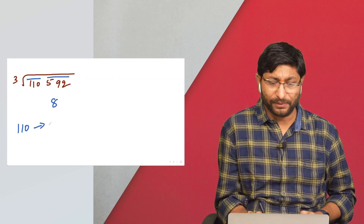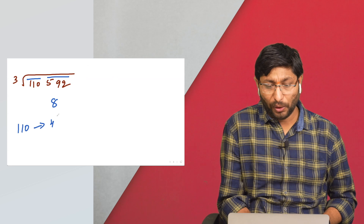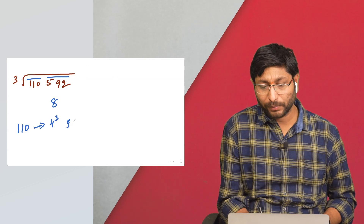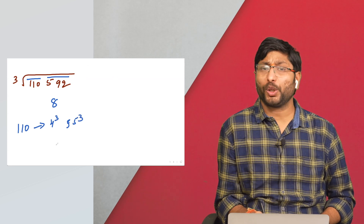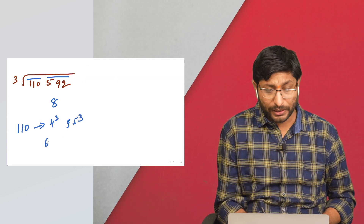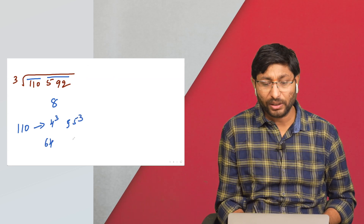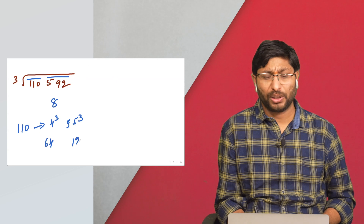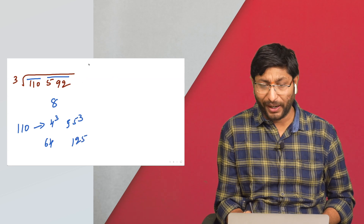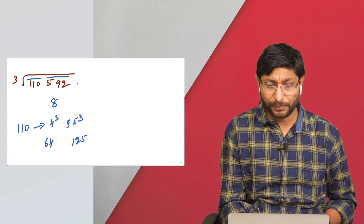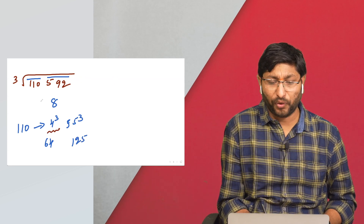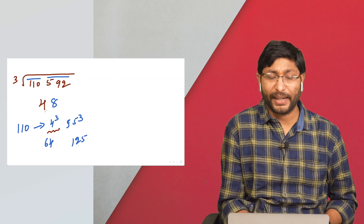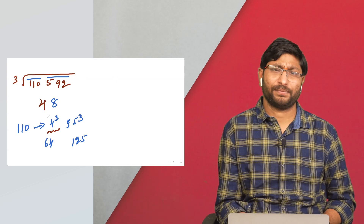Continuing the example: checking between 4³=64 and 5³=125, the value falls between these, so the lowest number is 4. Therefore the answer is 448.